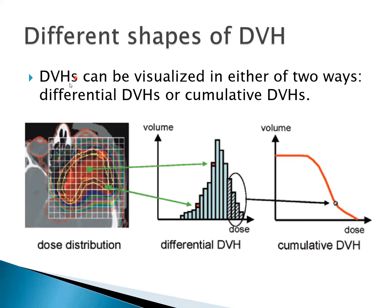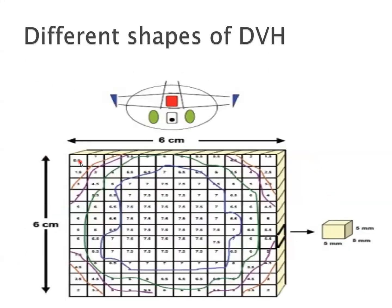It can be visualized in either of two ways: differential DVH or cumulative DVH. Whatever plan we do, it divides the total area into numerous grids, and in each grid a pixel is assigned. When you optimize the plan, the pixels are defined on each grid. In cubic form, this is called a voxel. The system takes the doses from these voxels and cumulates them in the form of a graph.